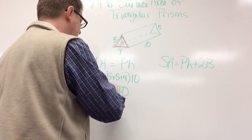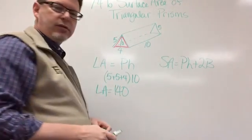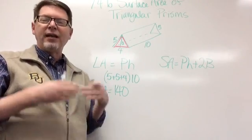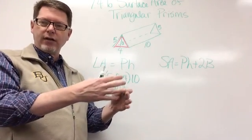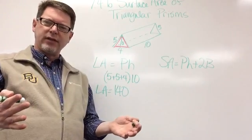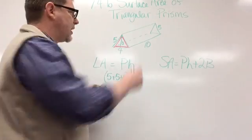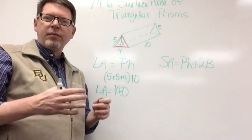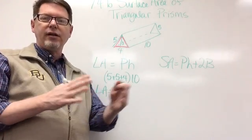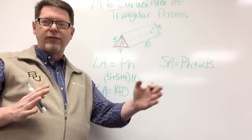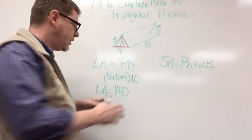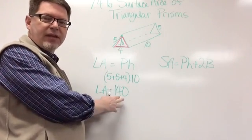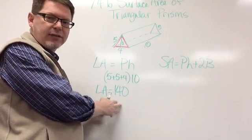So 5 plus 5 plus 4 is 14, times 10 is 140. My lateral area equals 140. The lateral area is all of the rectangles — it's the surface area without the two bases, so it does not include the areas of the triangles.